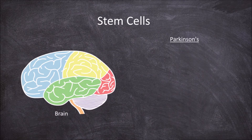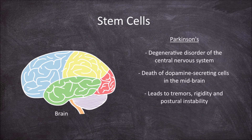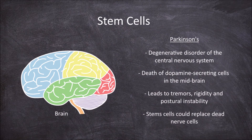Parkinson's disease is an example of a disease where stem cell therapy is being researched. Parkinson's disease is a degenerative disorder of the central nervous system. It is caused by the death of dopamine-secreting cells in the midbrain, affecting the ability for smooth and purposeful movement, leading to tremors, rigidity, and postural instability. Stem cells could be used in the treatment of Parkinson's by replacing the dead nerve cells with new dopamine-producing cells.